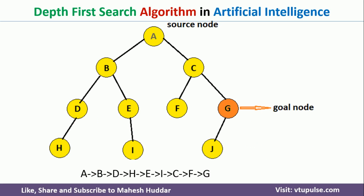To understand Iterative Deepening Depth-First Search Algorithm, we will first try to understand Depth-First Search Algorithm briefly. In the DFS Algorithm, we start at the root node and then traverse the left side of the tree. If we reach the goal node, we stop; otherwise we search the right side. The same process continues until we find the goal node. In this case, G is the goal node.